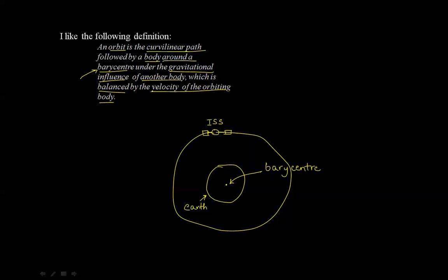Which is balanced by the velocity of the orbiting body. The ISS is a physical body in that it has some mass, let's say m. The Earth is also a physical body, however, it's much, much larger. Therefore, its mass, let's call it the large M.